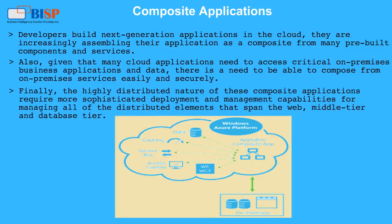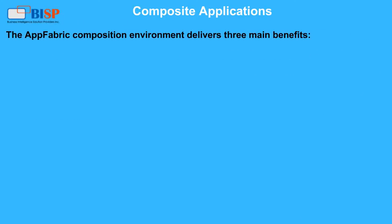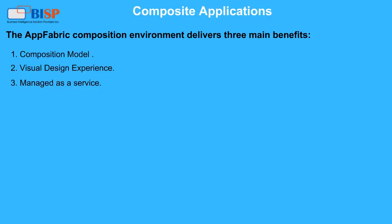The highly distributed nature of these composite applications requires more sophisticated deployment and management capabilities for managing all of the distributed elements that span the web, middle tier, and database tier. The AppFabric composition environment delivers three main benefits: 1. Composition model, 2. Visual design experience, 3. Managed as a service.